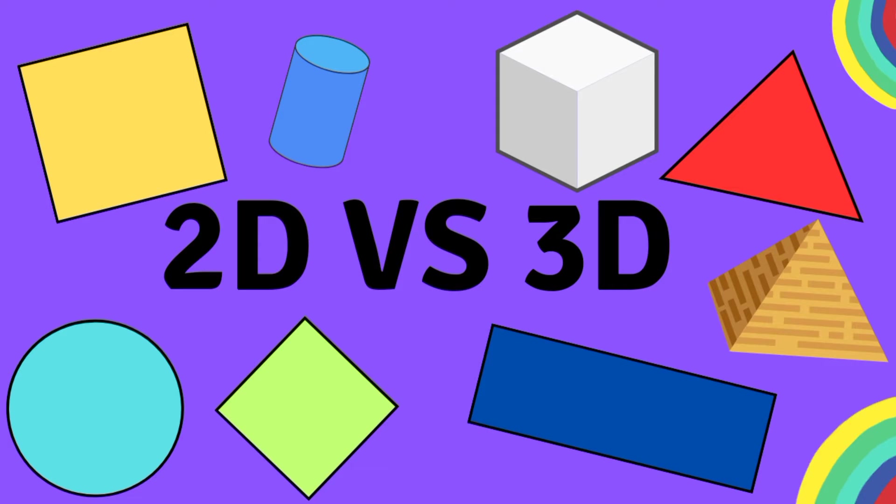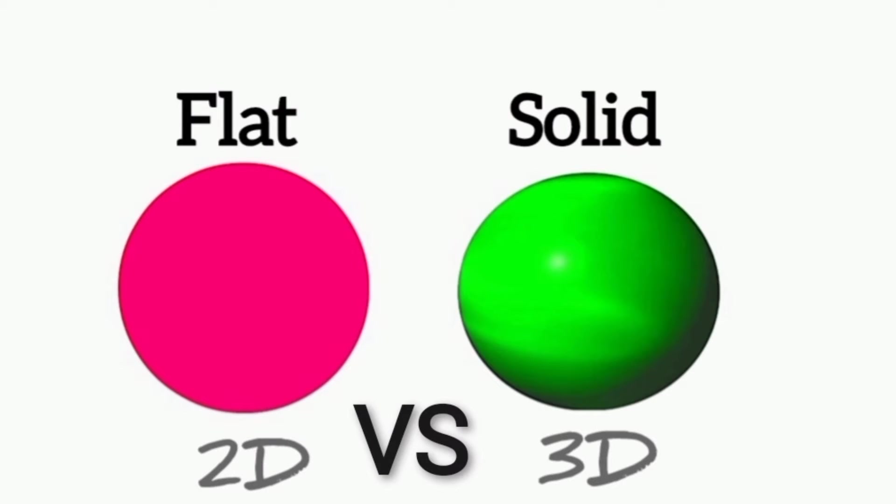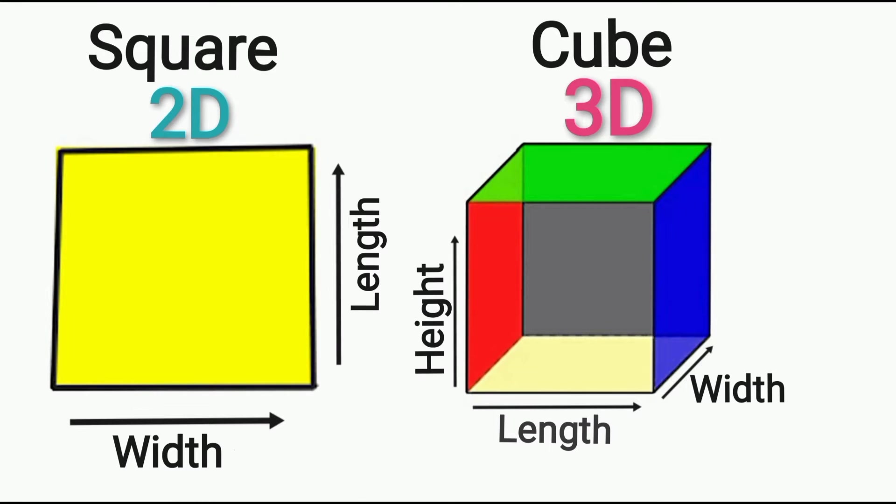Hello kids, let's learn the difference and properties of 2D and 3D shapes. What's the difference between 2D and 3D shapes? One of the easiest ways to understand 2D shapes is by imagining them as flat. 3D shapes are solid and we can hold them. 2D shapes only have length and width, but 3D shapes have length, width, and height.